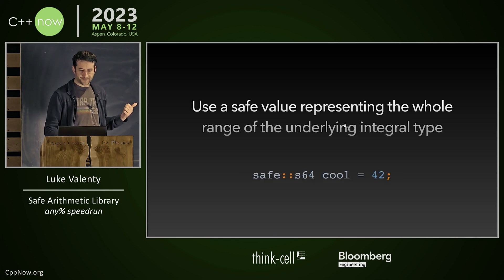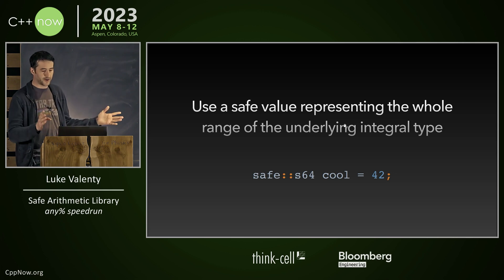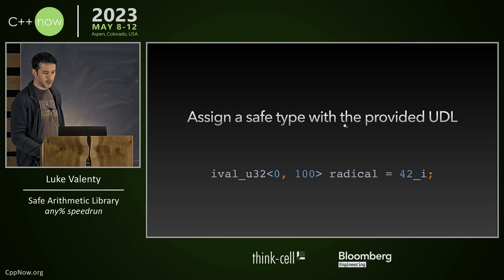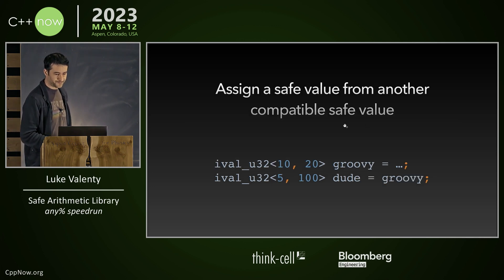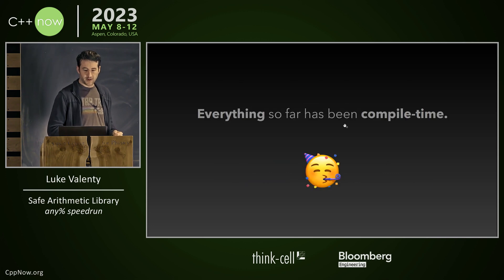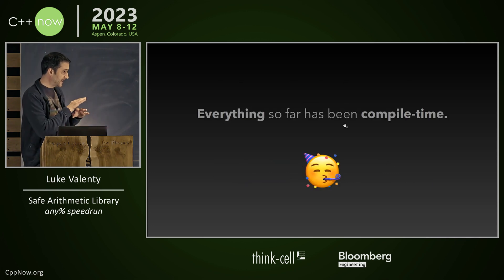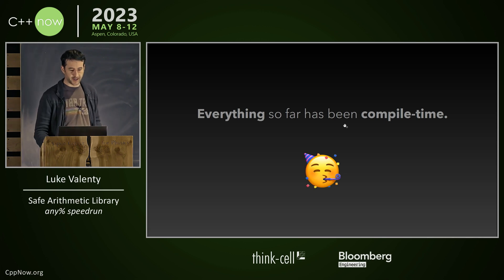So how do we create safe values? The simplest way is to use one of the predefined types that use the whole range of whatever type — in that case you can assign it a raw integral. Or you can assign a safe type using the provided UDL, which gives something like an integral constant. We can also assign a safe value from another compatible safe value. All of this is happening at compile time; you can't do these specific operations at runtime.